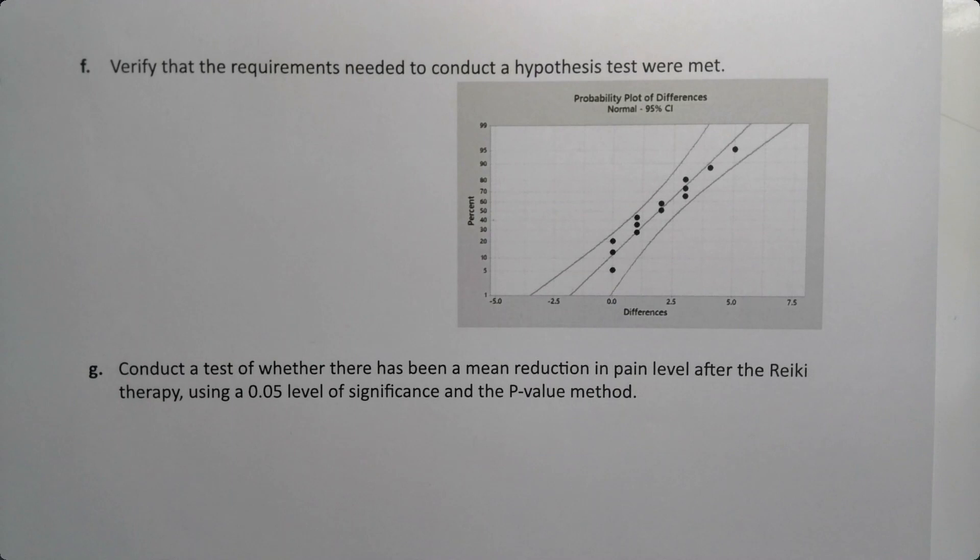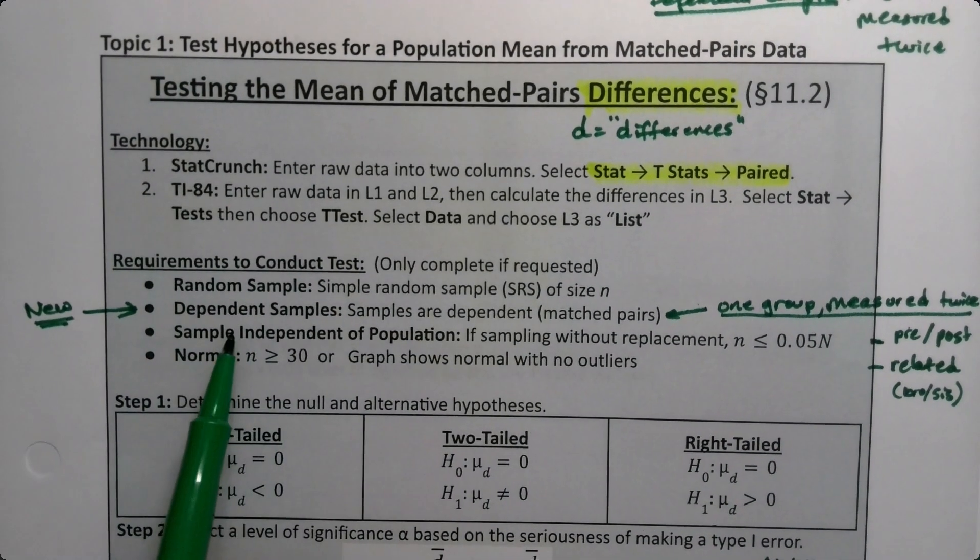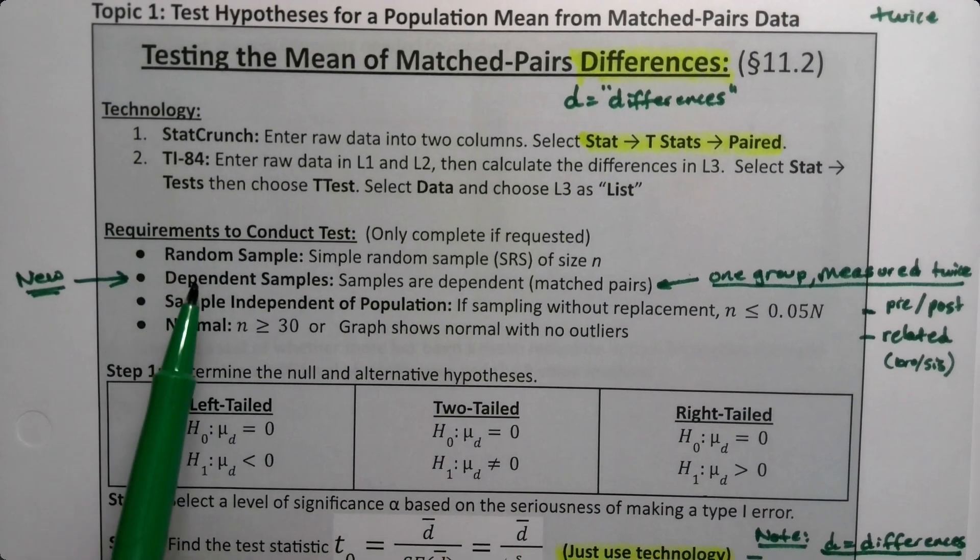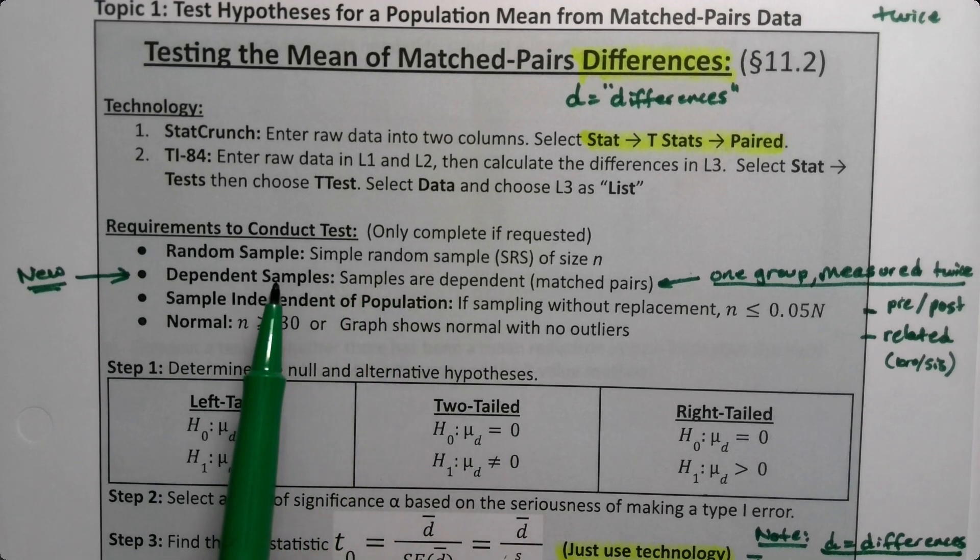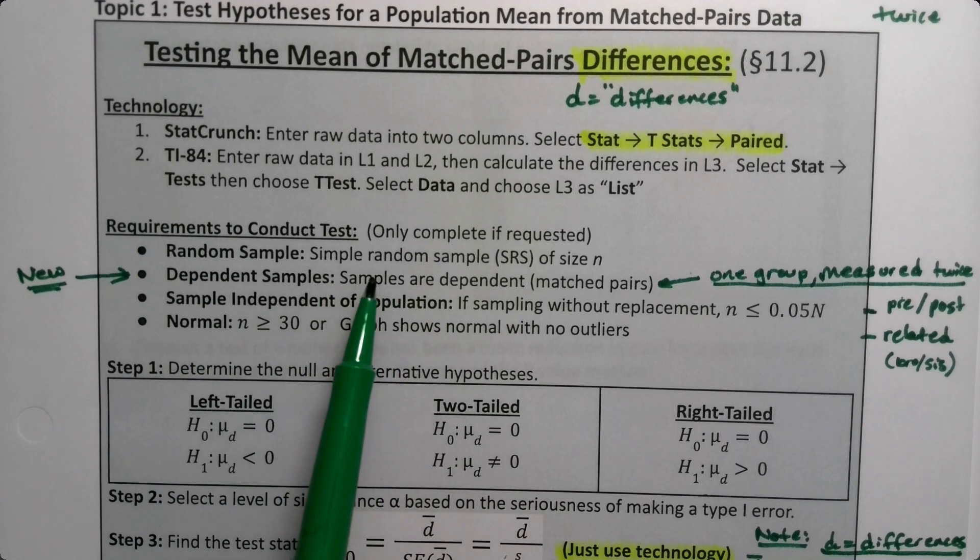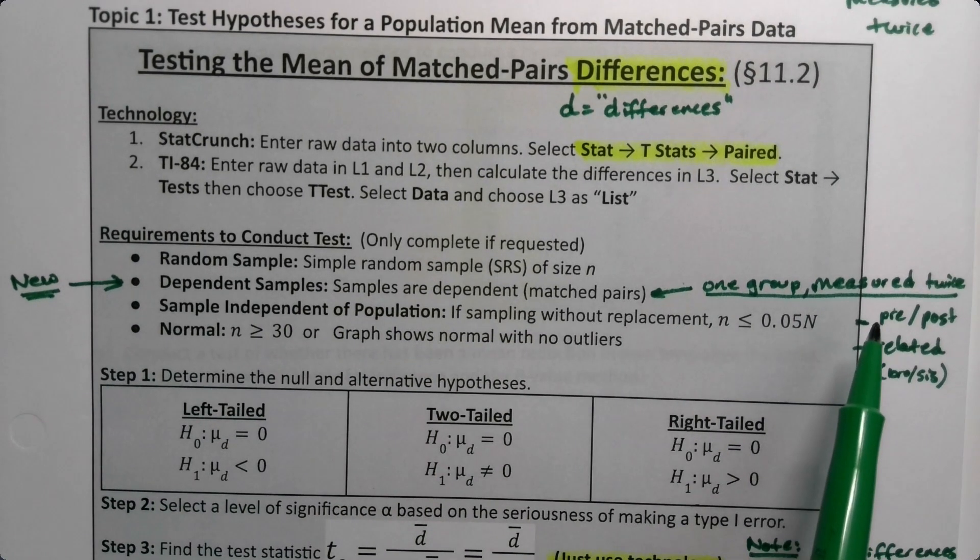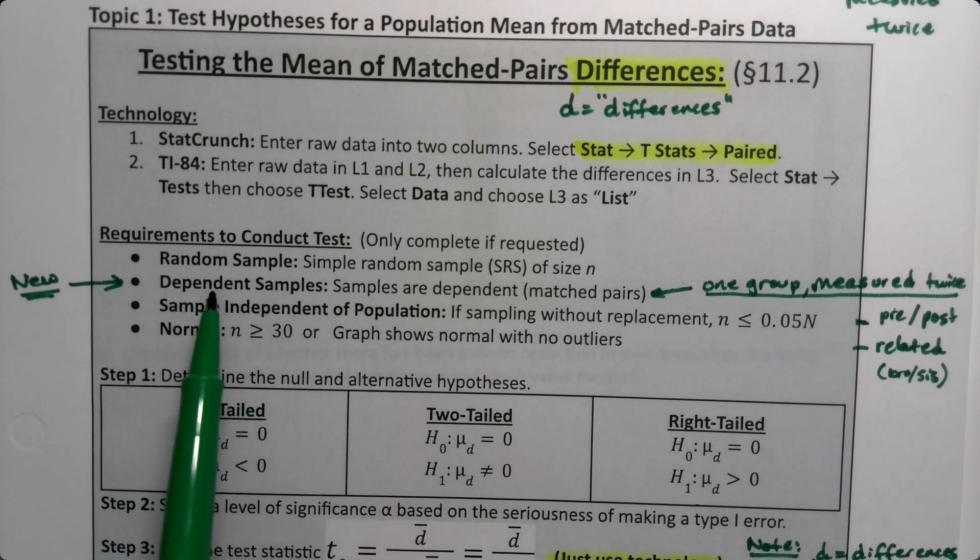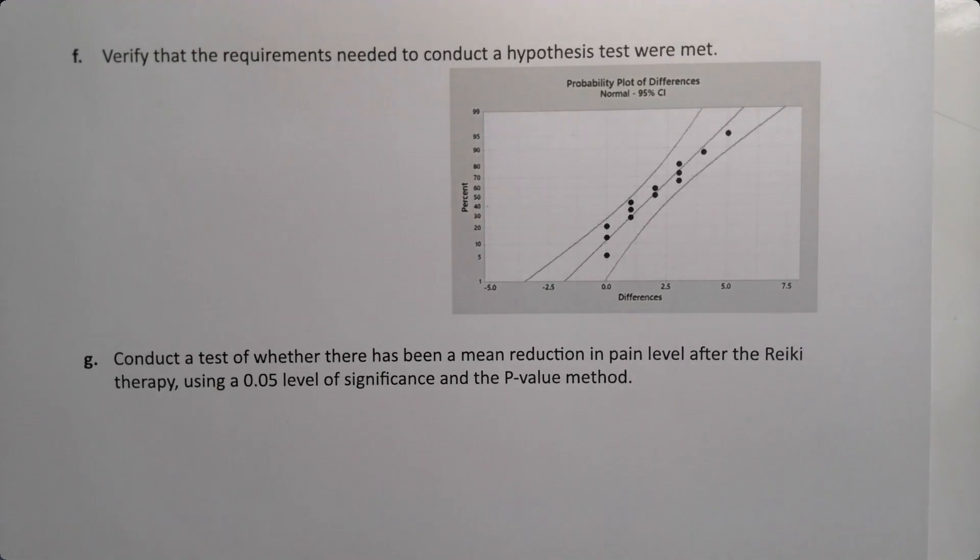Let's start with verifying requirements. We've seen this before but it has a new component. We need random and dependent samples, and then independent, which seems a little strange. But what's happening is your samples need to be dependent upon each other, like pre and post which is what we have in this case. You also need that group of people to be independent of the population, and the sample size is bigger than 30 or a graph which is what we have here.